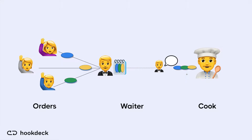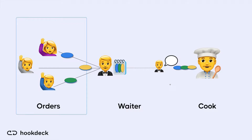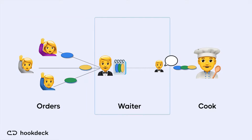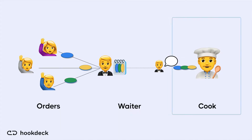A good way to imagine a message queue is when you are in a restaurant with friends. You and your friends are the message producers because you place orders from the menu. The waiter that receives, holds and delivers your orders is the message queue. The kitchen where the orders are delivered to and processed is the message consumer.